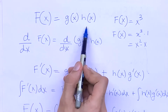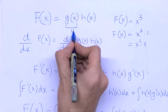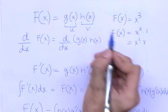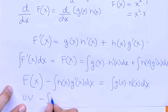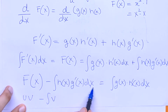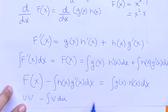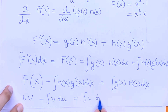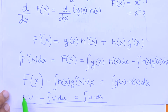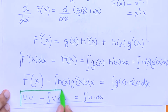If we take g of x as u and h of x as v, we get u·v minus the integral of v·du. And this equals the integral of g of x times h prime of x dx, which is u times dv. So this is our formula.